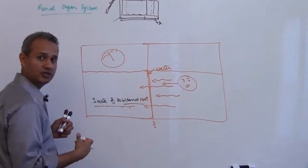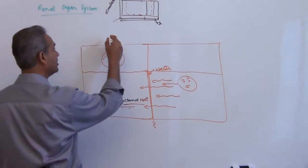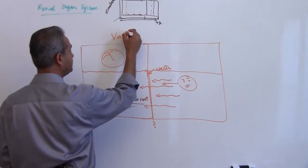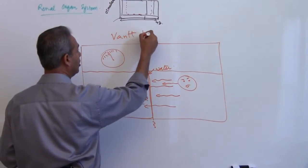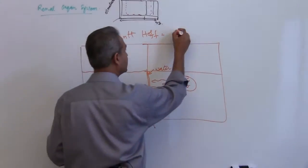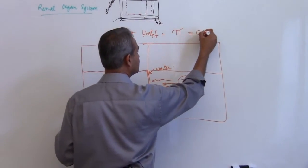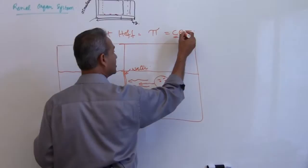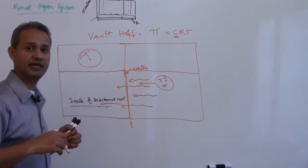By this movement of the water, we have the Vanthoff formula which says that osmotic pressure equals CRT: concentration times temperature and gas constant.